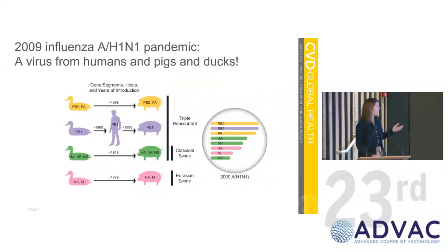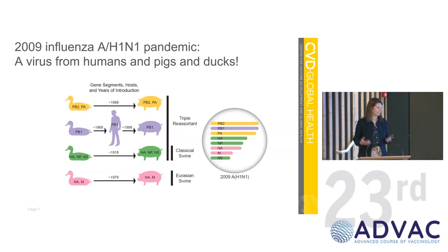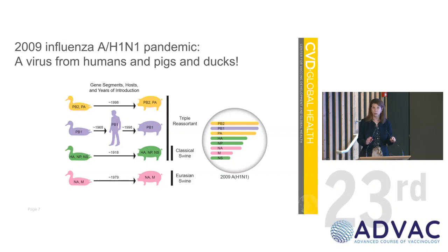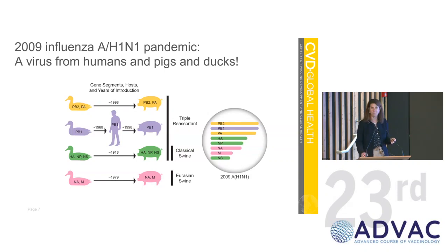The last big problem we had was in 2009. This is a beautiful slide that makes the point that reassortment is happening all the time. When you trace back the origins of the 2009 virus, there was originally a triple reassortment, then an additional reassortment with that neuraminidase and M protein — with these reassortments occurring from birds to pigs, ducks to pigs, ducks to humans back to pigs, and ultimately a virus transmitted to and between humans.